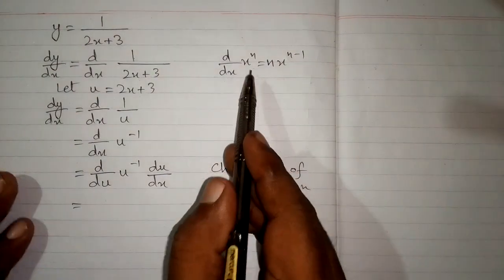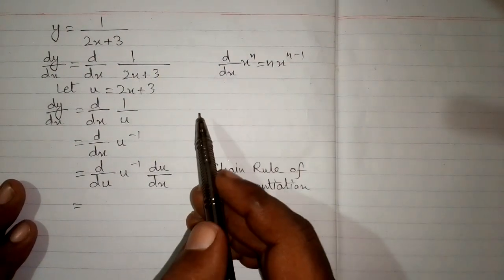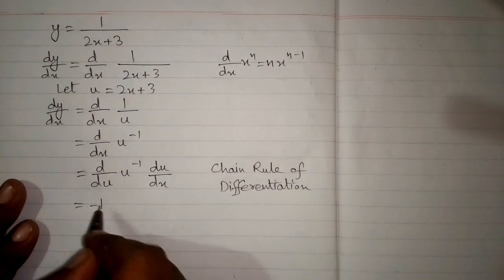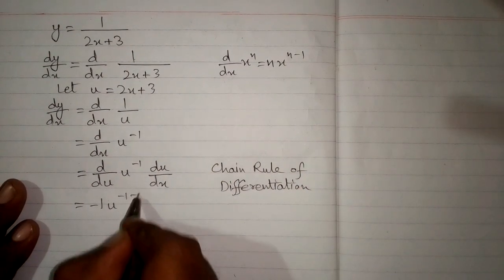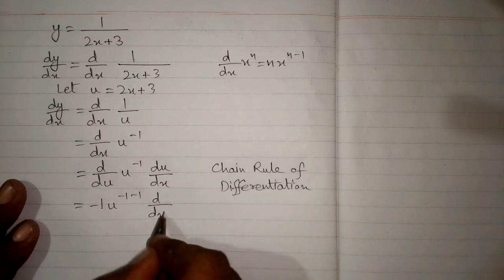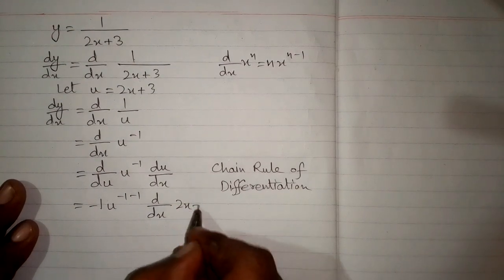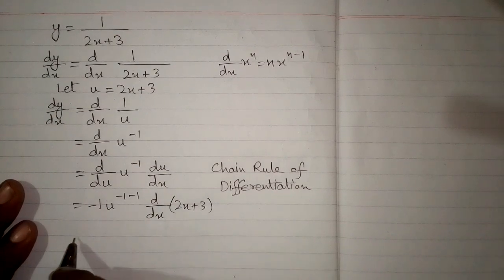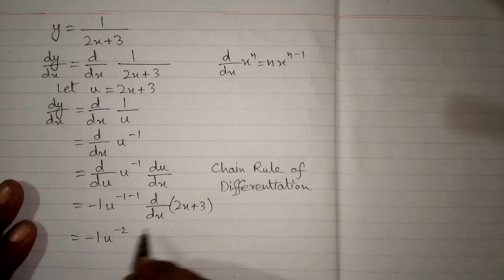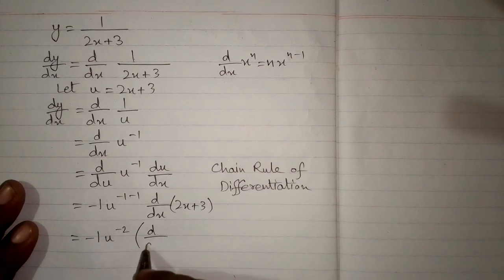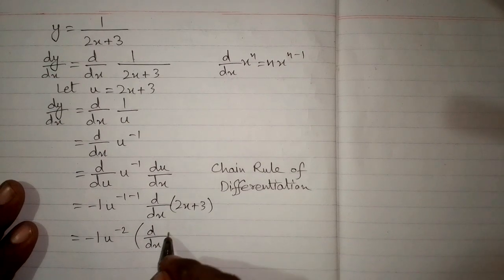Now we can apply this formula. We can see that we have minus 1 in place of n. So we will write minus 1 times u raised to the power minus 1 minus 1, and multiply by the derivative of 2x plus 3. We will put the value of u here. Then we have minus 1 times u raised to the power minus 2. And in the bracket we have two terms, so we will apply the derivative on both terms.